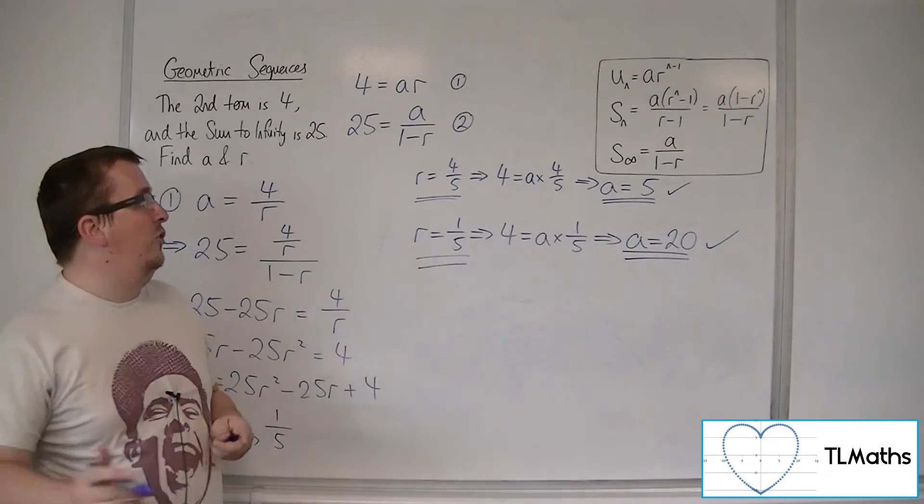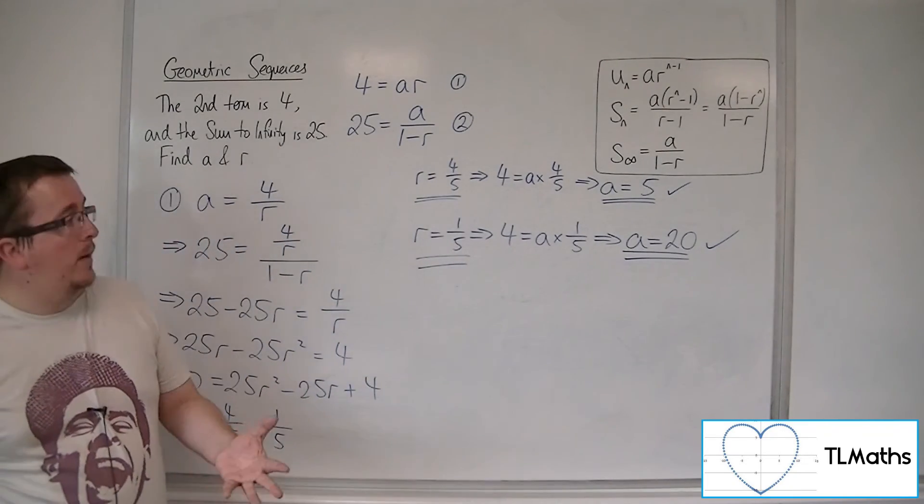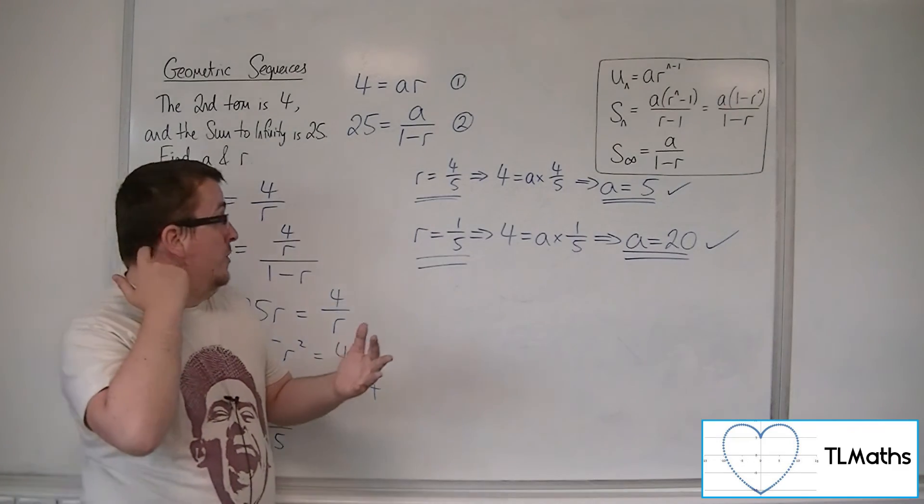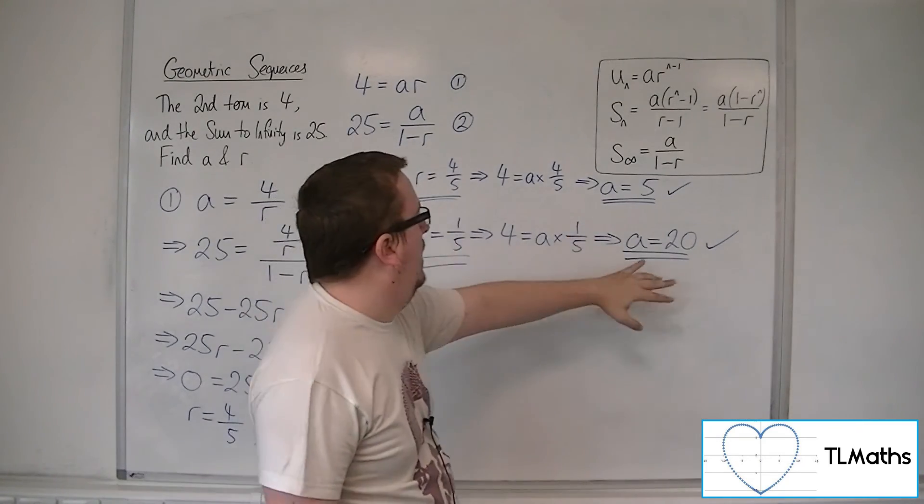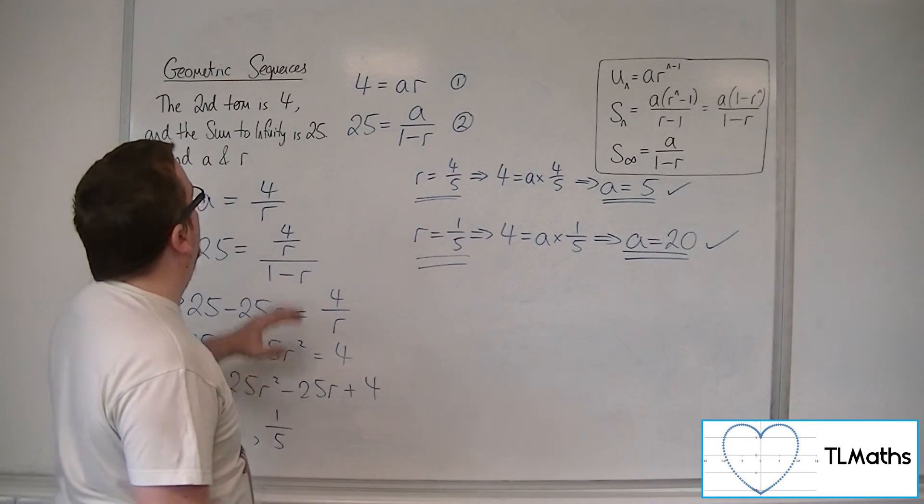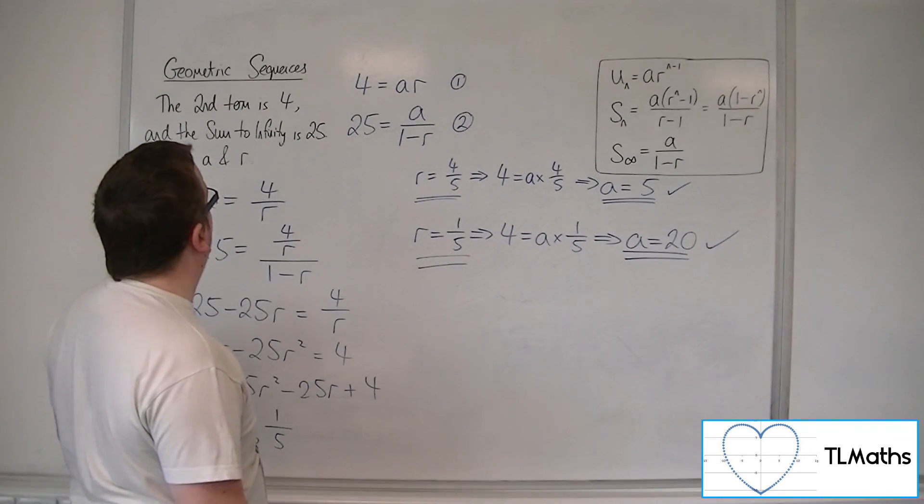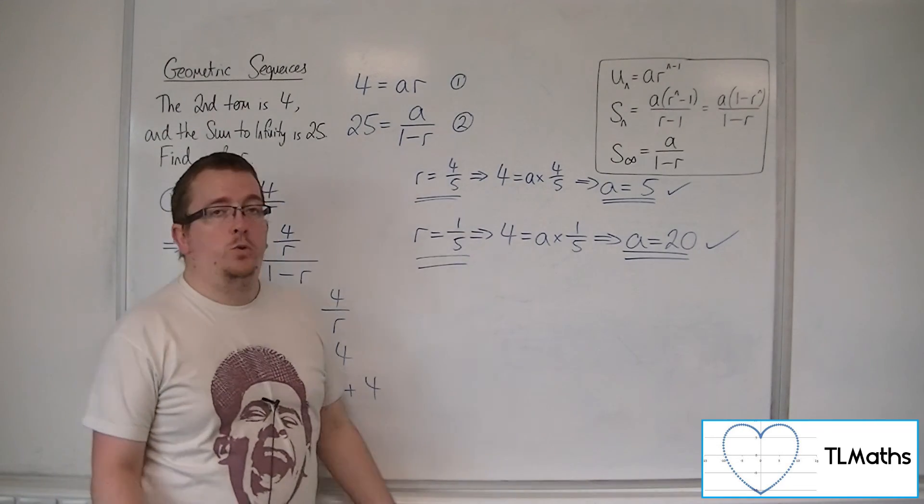So in this case, we've actually got two possible answers, which can happen. So we've either got that a is 5 and r is 4 fifths, or a is 20 and r is 1 fifth. Because that works for the second term being 4, and in both cases, the sum to infinity is 25.